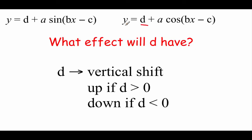We're focusing on this d value, which is either being added or subtracted to our sine or cosine, depending on what we're looking at. d is going to be a vertical shift — it moves us up if that d value is positive, and down if that d value is negative.